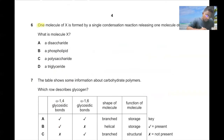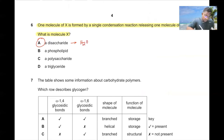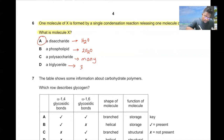Question number six. One molecule of X is formed by a single condensation reaction releasing one molecule of water. What is molecule X? It can be a disaccharide, because when two monosaccharides join they release one water molecule. A phospholipid releases at least two water molecules, a polysaccharide releases many, and a triglyceride releases at least three.